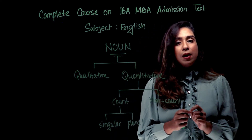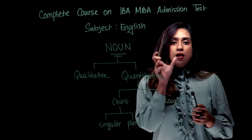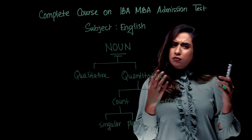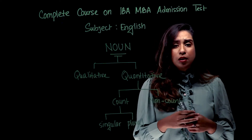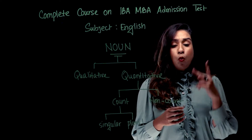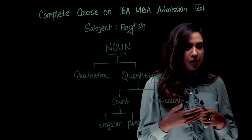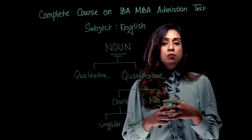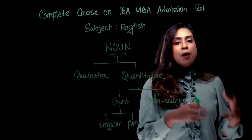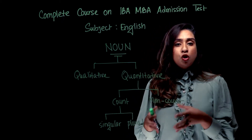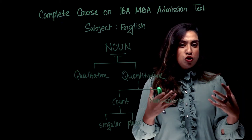Moving on, the interesting part is non-count, because non-count is very different. If you have a non-count noun, you cannot add an S or count 1, 2, 3, 4. For example, feelings and emotions are non-count: happiness, sorrow, grudge — these names are non-count.